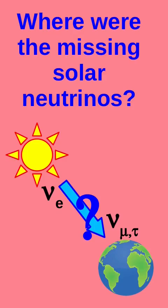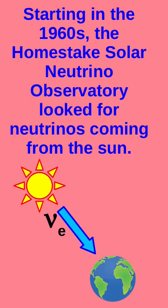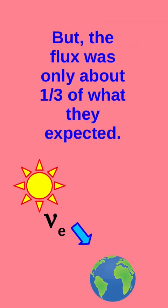Where were the missing solar neutrinos? Starting in the 1960s, the Homestake Solar Neutrino Observatory looked for neutrinos coming from the Sun, and they found them, but the flux was only about one-third of what they expected.